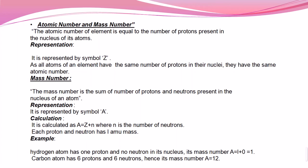Each proton and neutron has a mass of one AMU. AMU stands for atomic mass unit, which is the standard SI unit used for finding the atomic masses of any element.